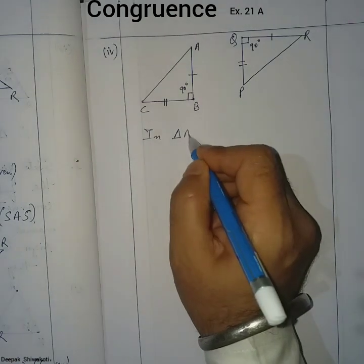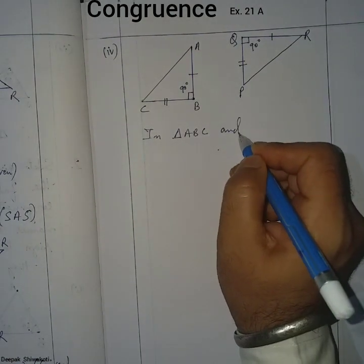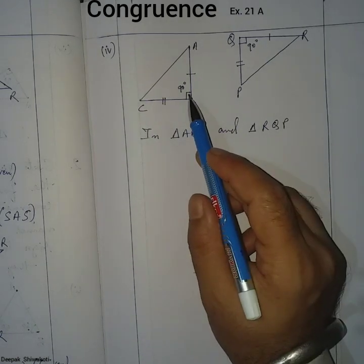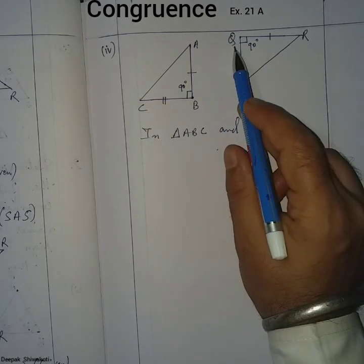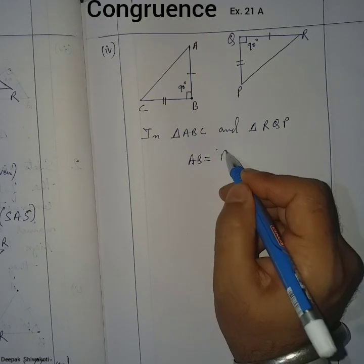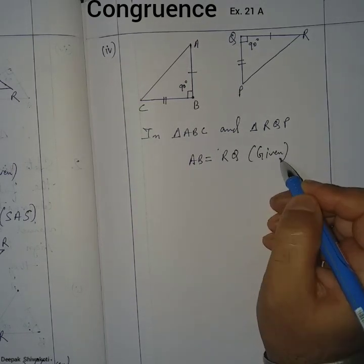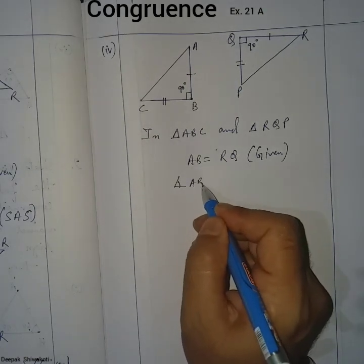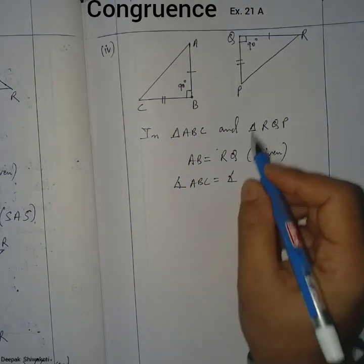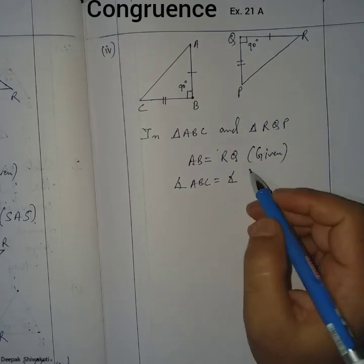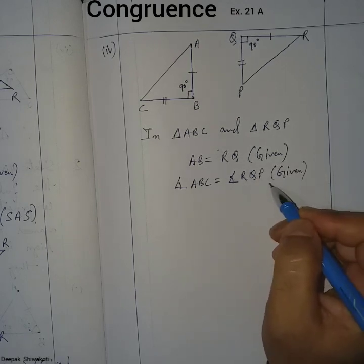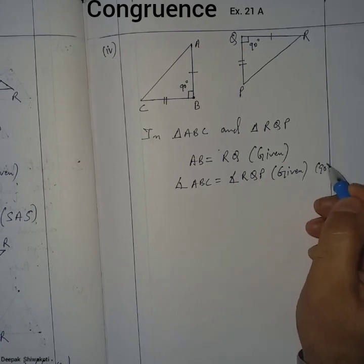In triangle ABC and triangle RQP: side AB is equal to side RQ — given in the figure. Angle ABC and angle RQP are both 90 degrees — also given in the figure.